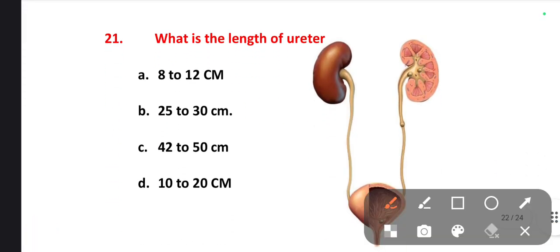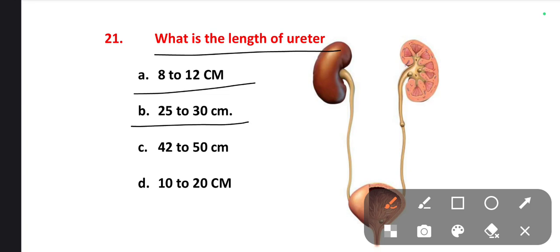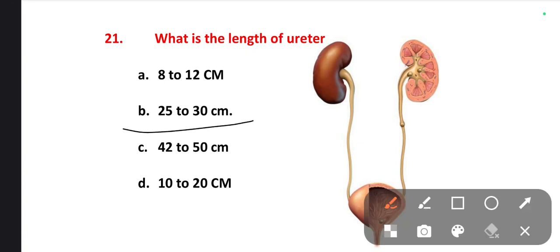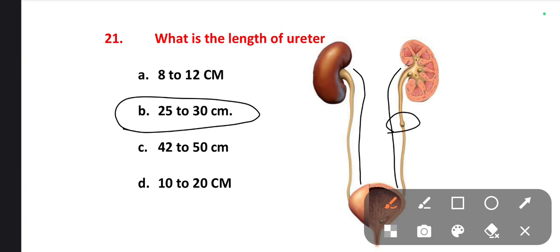The next one is: what is the length of the ureter? Options are 8 to 12 cm, 25 to 30 cm, 40 to 50 cm, 10 to 20 cm. The right one is option B — 25 to 30 cm is the length of the ureter. Here we can see a small obstruction, which is ureter calculi — calculi is a stone. When a stone is present, it causes obstruction of urine and leads to hydronephrosis.